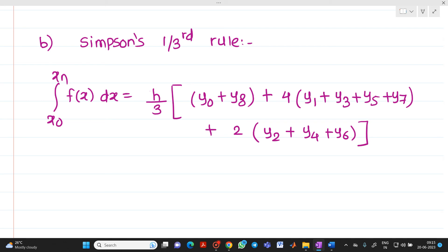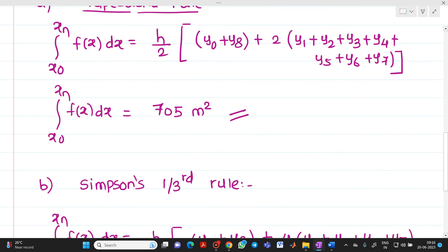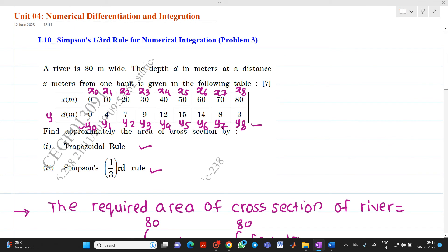If you substitute all the values from y0 to y8 with the value of h, you will get the answer as 710 meters square. This is how to solve this numerical by both methods: trapezoidal rule and Simpson's one-third rule. This was a question asked for 7 marks. If you solve it like this, you will definitely get 7 marks. Thank you for watching this video.